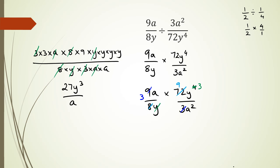Next is my a disappears here, and this 2 becomes a 1. So looking at the numerator, I've got 3 times 9, which is 27y cubed, divided by just 1a.